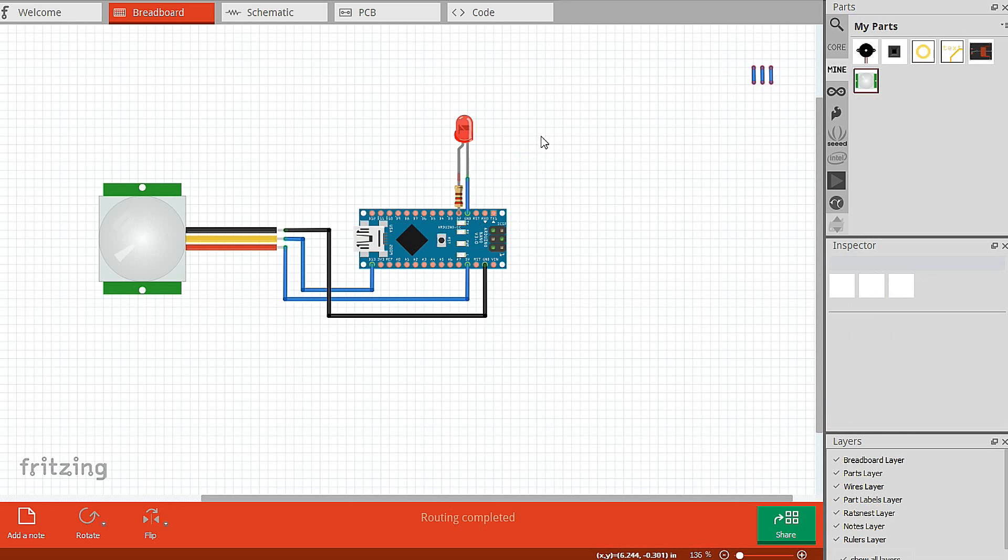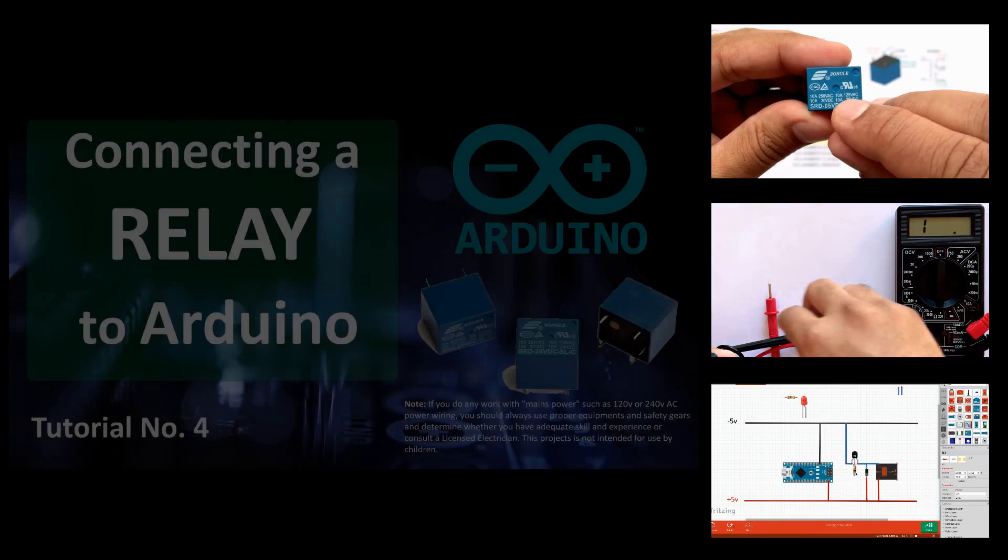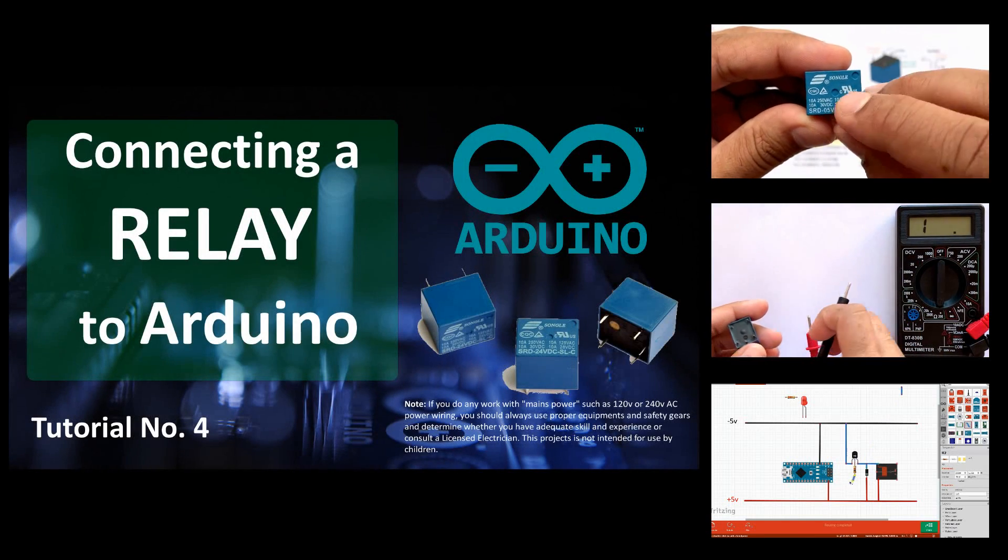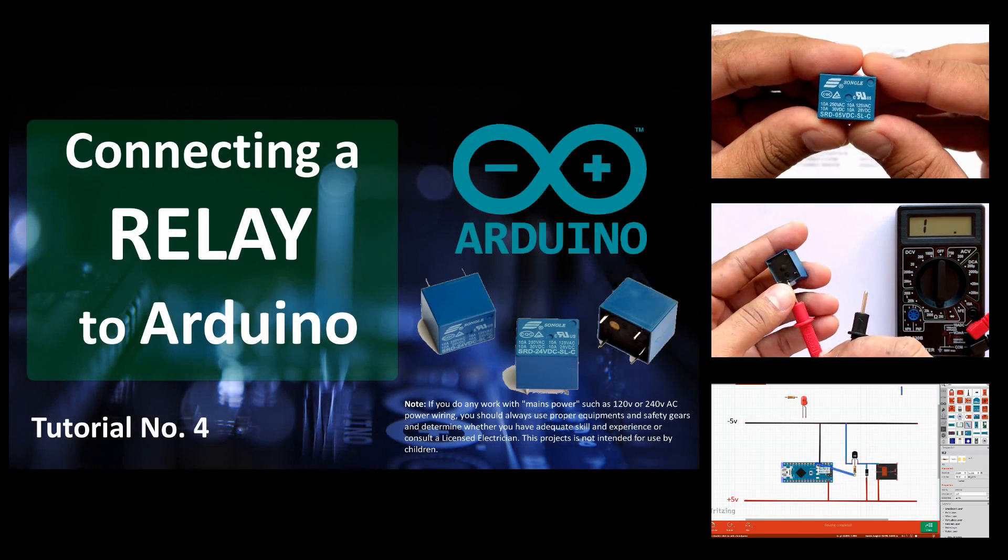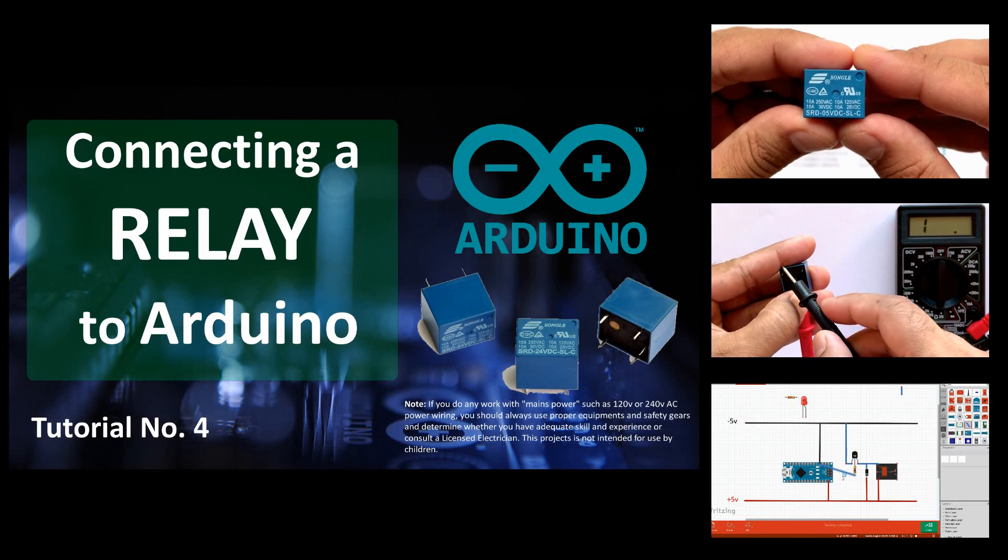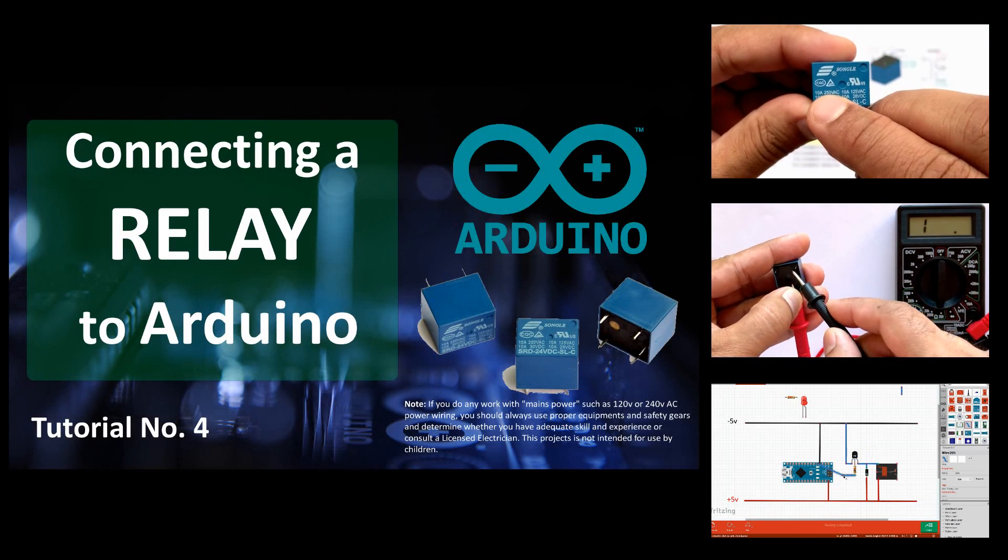You can replace the LED with a buzzer to raise an alarm when an object is detected, or a relay to drive a high voltage circuit. To learn more about relays, please have a look at my tutorial number 4, which is driving a relay with an Arduino. You can find the link in the description section below.